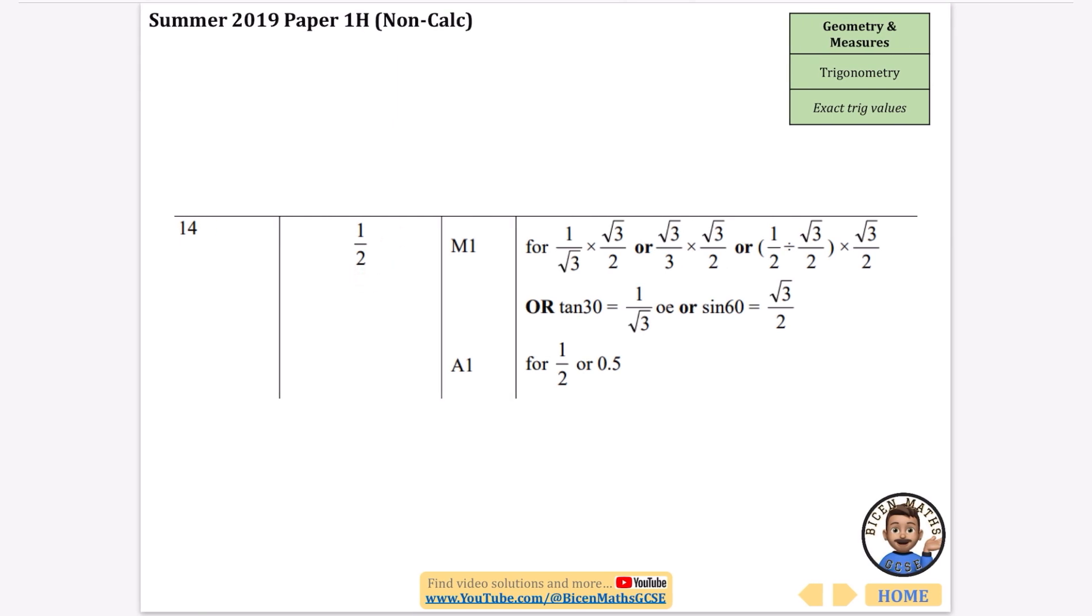So if you knew that tan 30 was one over root three, or you might know it as root three over three.